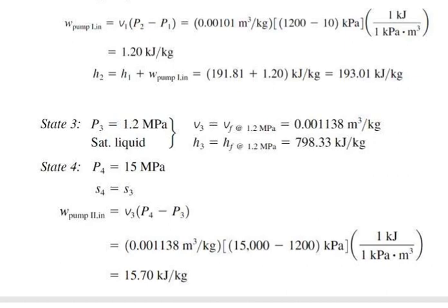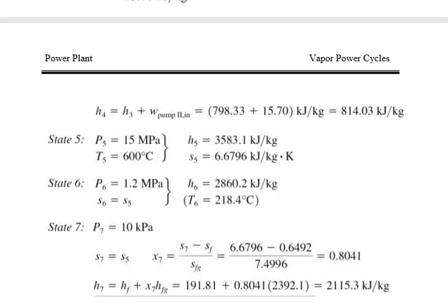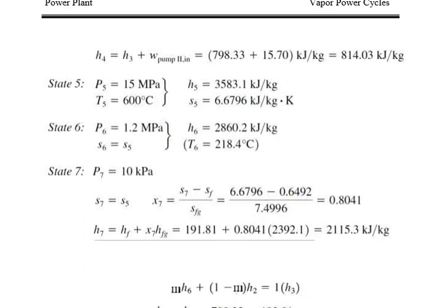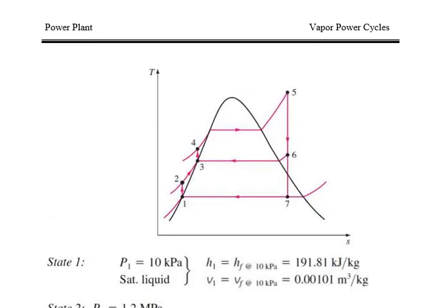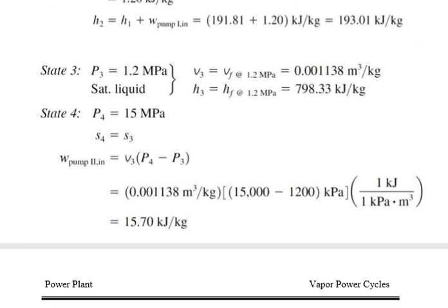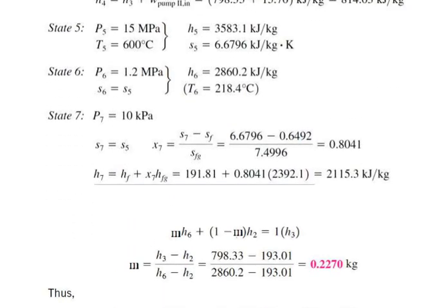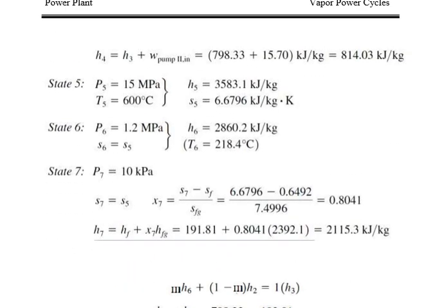Solving for m: m = (H3 − H2) / (H6 − H2) = (798.33 − 193.01) / (2860.2 − 193.01) = 0.2270 kg per kg of steam circulated. This gives the mass of steam bled. Now find the thermal efficiency: η = 1 − Q_out / Q_in. Q_in = H5 − H4 = 3583.1 − 814.03 = 2769.1 kJ/kg.